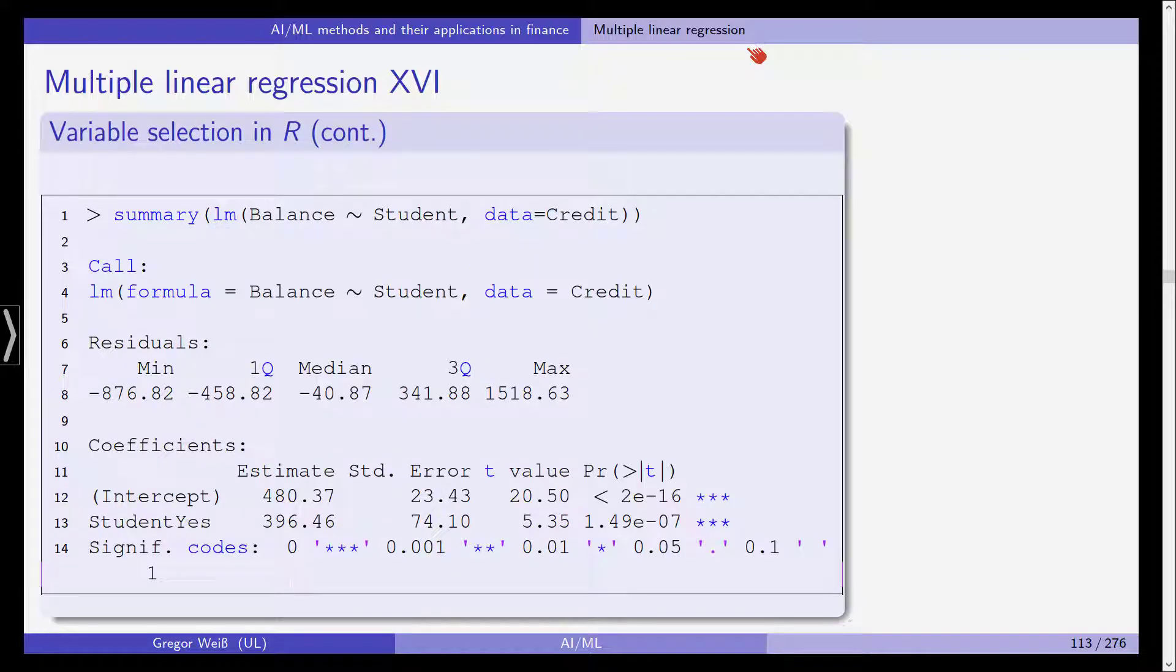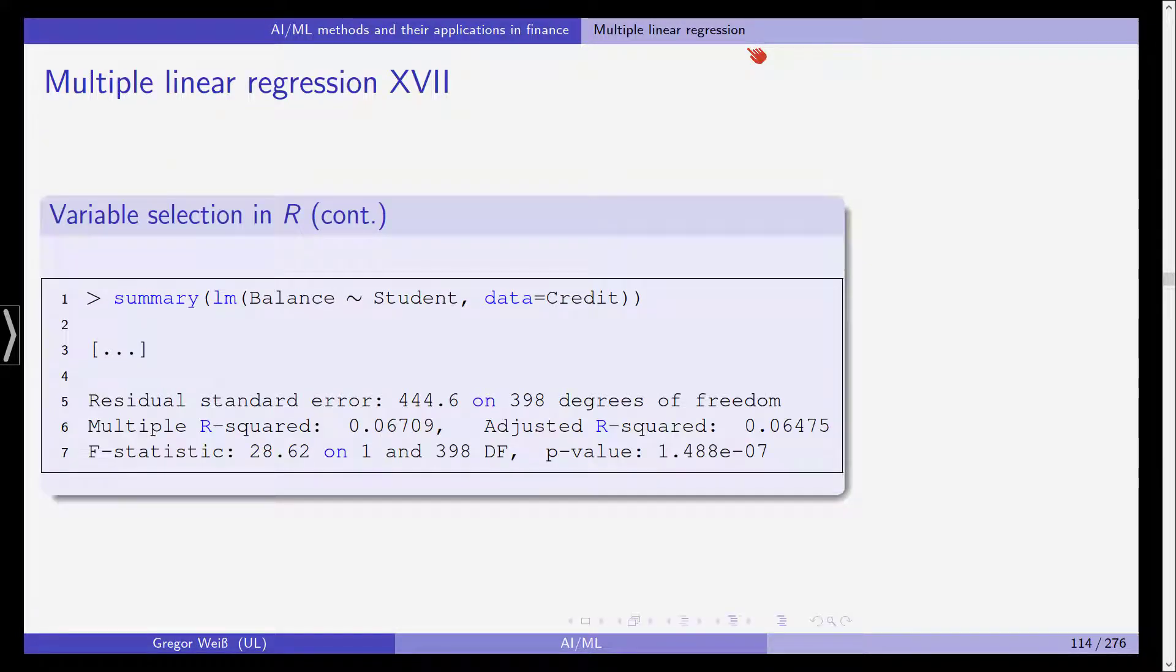We start with a dummy variable for student. Are you a student or not? We use the credit data and we try to predict the balance of the credit card. We use LM in R, which is the linear model, so the multiple regression. You can see here that the dummy variable for being a student is highly statistically significant. We have a t-value of 5.35, and yes, we should include this variable. We can also see that the adjusted R squared for this simple linear regression is close to 7%, so around 7% of the total variance is explained by our model.